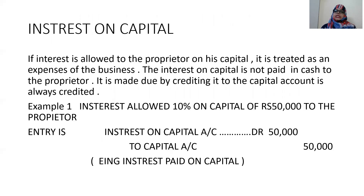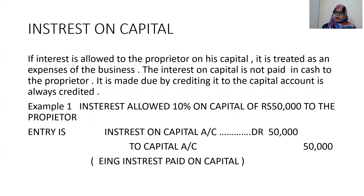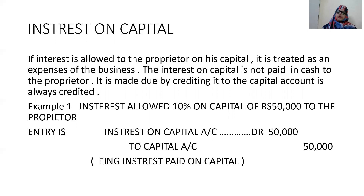Next: interest on capital. If interest is allowed to the proprietor on his capital, it is treated as an expense of the business. Interest on capital is not paid in cash to the proprietor — it is made due by crediting the capital account. It is income to the proprietor but an expense to the business. The capital is brought into the business by the proprietor, so if you pay interest on that capital it is income to the proprietor but an expense to the business — it is always credited to the capital account.